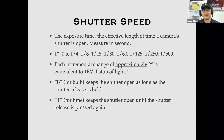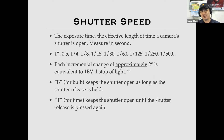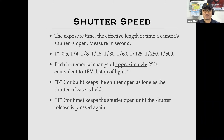Why do we say 'approximately'? For example, 1/15 of a second divided by two should be 1/7.5, which is difficult to use, so it rounds up to 1/8. And 1/60 divided by two would be 1/120, but we use 1/125 instead. Then 1/250, 1/500, 1/1000, 1/2000 of a second, and so on — close enough. We also have 'B' for long exposure, and some lenses have a 'T' shutter speed, which stays open when clicked and closes on the next click, designed especially for long exposure.